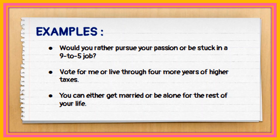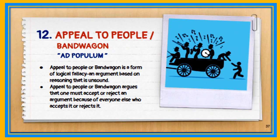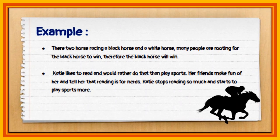Finally, the appeal to people fallacy, or the bandwagon fallacy. It is a form of logical fallacy which argues that one must accept or reject an argument because everyone else accepts or rejects it. For example, many people are rooting for the black horse to win a race — therefore the black horse will win. Also, Katie likes to read rather than play sports, but her friends tell her reading is for nerds, so Katie stops reading and starts playing sports more.